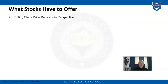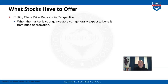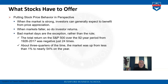Now let's have a look at the price behavior of stocks. In general, we can expect that when the market is strong, investors are earning a lot of money and benefiting from price appreciation. On the opposite side, when markets are going down, returns of investors are going down. Looking at the historical side, the S&P 500 — one of the major indices covering the 500 biggest publicly-traded companies in the U.S. market — provides a great reference.